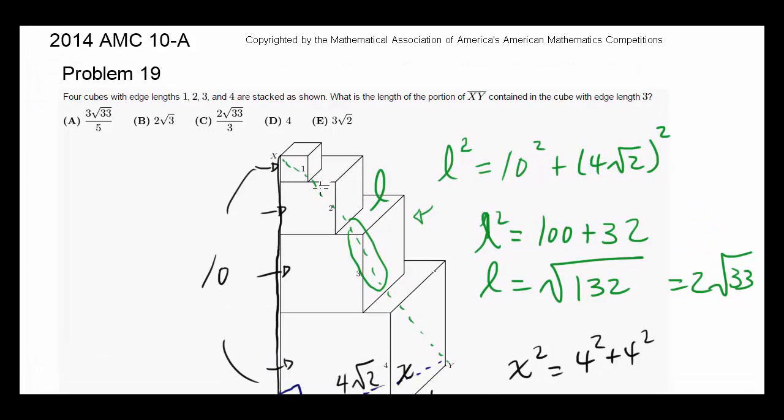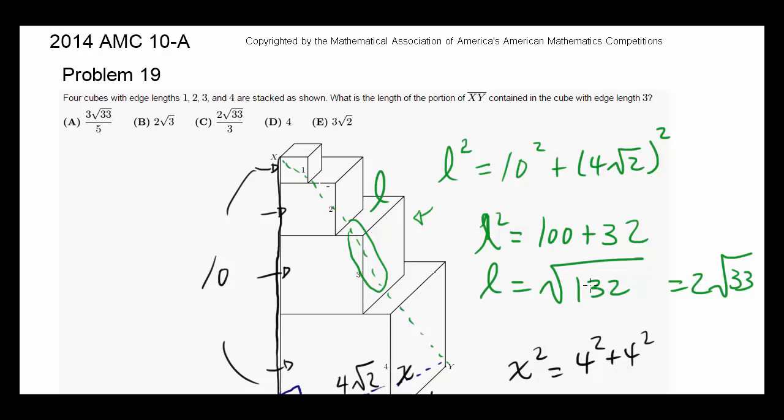Now, what is the length of the portion of XY, which is L, and we know the L is 2 times square root of 33 long, contained in the cube with edge length 3?